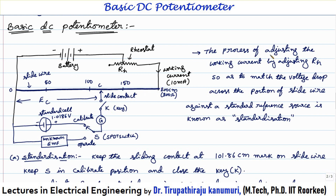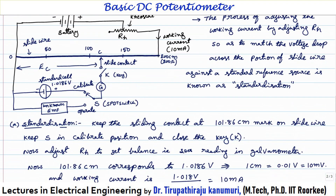Standardization is the process of adjusting the working current by adjusting the value of RH so as to match the voltage drop across a portion of the slide wire against the standard reference source. The procedure is: whenever you want to measure the unknown voltage, first connect switch S to the calibrate position, then keep the slide contact at 101.86 centimeters on the slide wire, and keep S in the calibrate position so that the standard cell is connected.